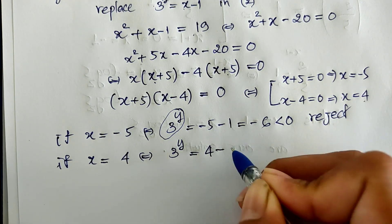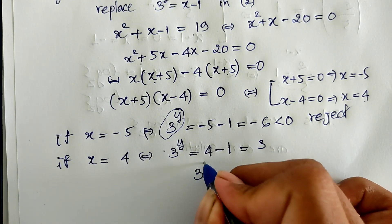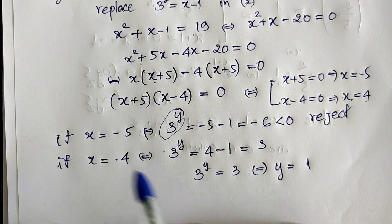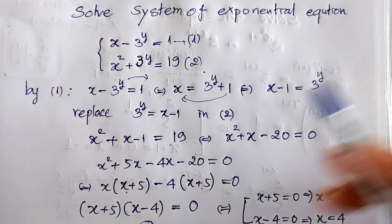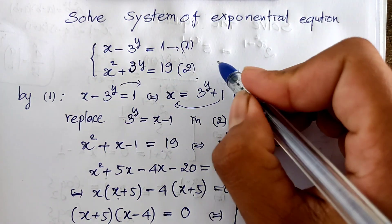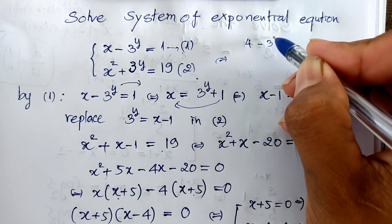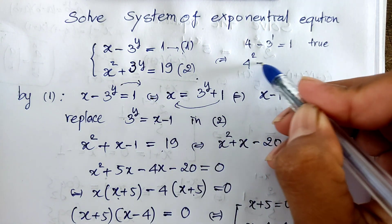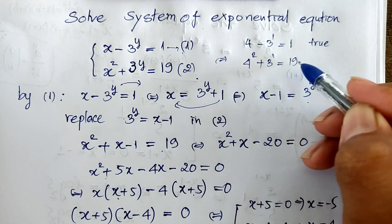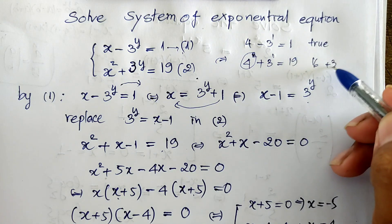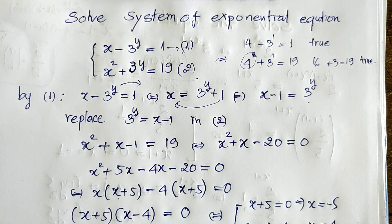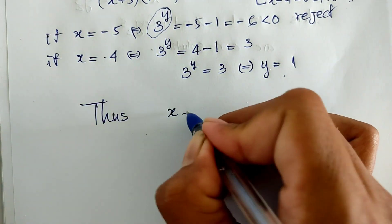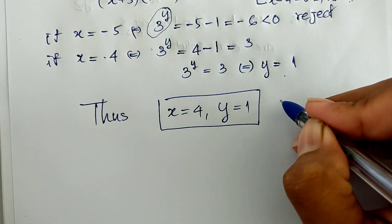So h equals 4. If h equals 4, we get 3 to the power y equals 4 minus 1 equals 3, so 3 to the power y equals 3, giving y equals 1. Now we verify: replacing h equals 4 and y equals 1, we get 4 minus 3 to the power 1 equals 1 — true. And 4 squared plus 3 to the power 1 equals 16 plus 3 equals 19 — true. Therefore, h equals 4 and y equals 1 is our solution.